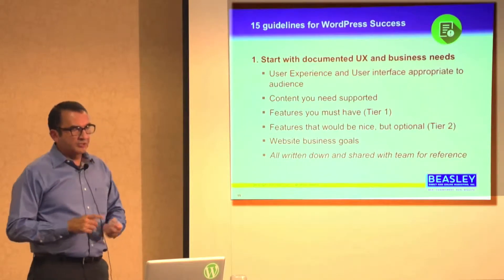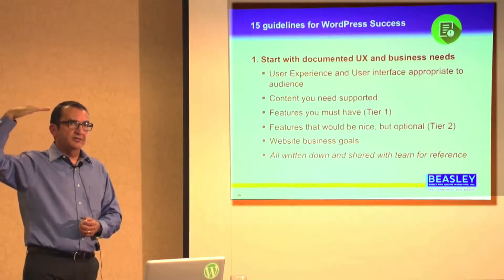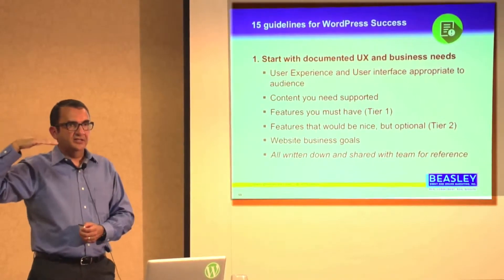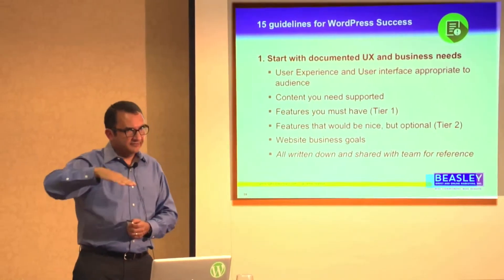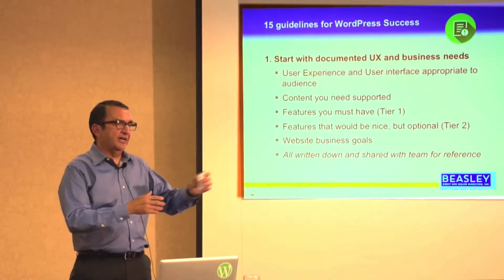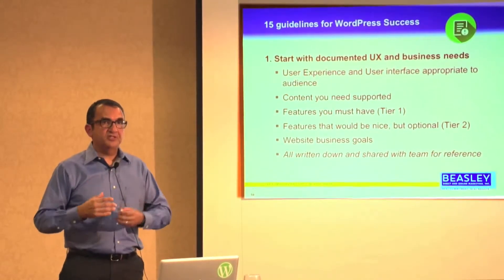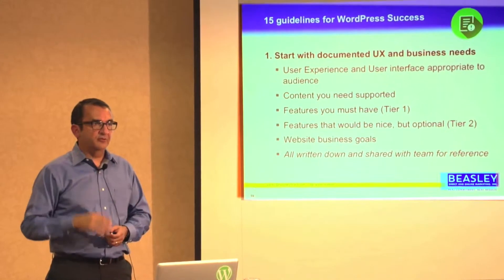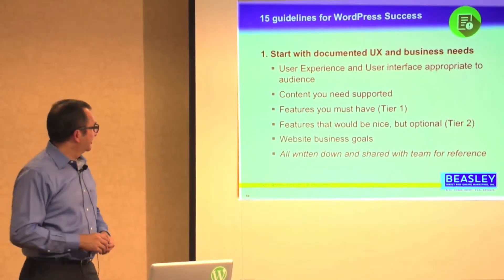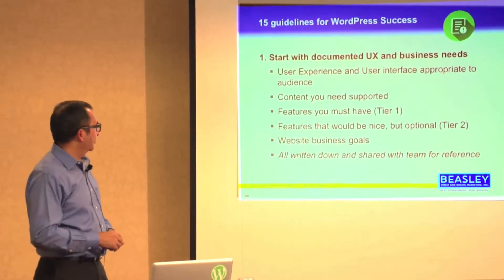So you want to look at the content that you need supported, the features that you need. I always put them in two tiers — it's very important. There are features we must have for our business needs and site needs, and then the features we'd like to have. With WordPress, you're going to need to make some concessions somewhere along the way, so having everybody on the same page with what's tiered is very valuable. It eliminates confusion and helps for the process.